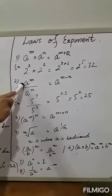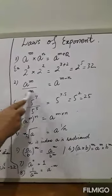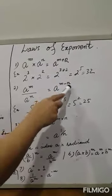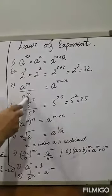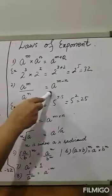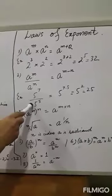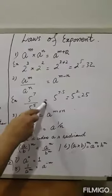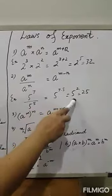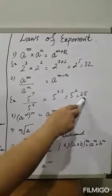The second law is: A raised to power M divided by A raised to power N equals A raised to power (M minus N). When dividing with the same base, subtract the powers. For example, 5 to the power 7 divided by 5 to the power 5 equals 5 to the power (7 minus 5) equals 5 squared, which equals 25.